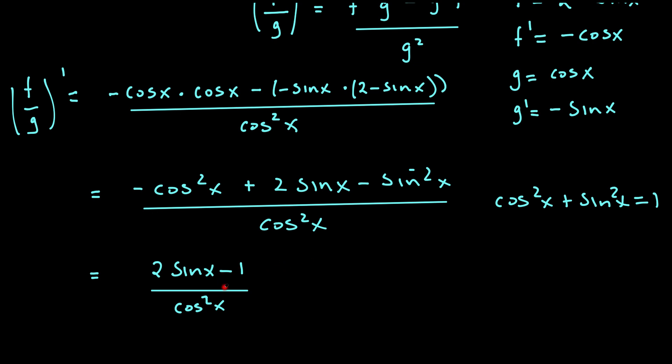So this is my simplest form. Now I'm going to use the condition for stationary points. Basically the gradient function is equal to 0, in other words (f/g)' = 0.